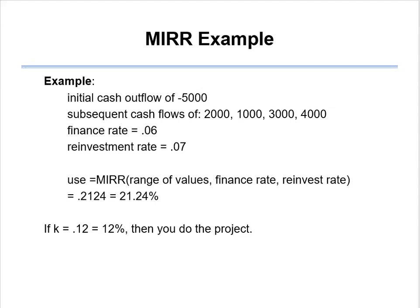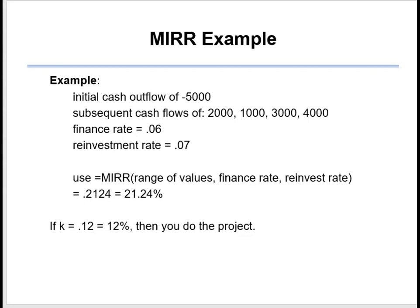The Excel formula is MIRR — Modified Internal Rate of Return. You'll see that it asks for a range of values, just like we did in the internal rate of return. Don't forget, one of those values has to be negative, otherwise you'll get a pound-sign NUM error. The finance rate is the rate of getting the money; the investment rate is the rate at which we can reinvest. When we calculate this out, we get 21.24%. If the Modified Internal Rate of Return is greater than the cost of capital — in this case 12% — then 21% is better than 12%, so you do the project.